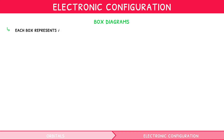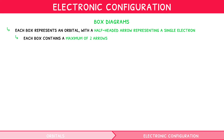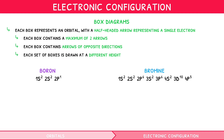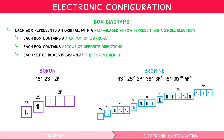You must also be comfortable writing electronic configurations visually using box diagrams. Each box represents an orbital, with a half-headed arrow representing a single electron within each box. Each orbital can only contain two electrons, so each box contains a maximum of two arrows. Both electrons must have opposite spins, so each box contains arrows of opposite directions. As the orbitals have different energy levels, each set of boxes is drawn at a new height. Let's reuse our examples of boron and bromine — their full electronic configurations and visual box diagram representations are shown here.